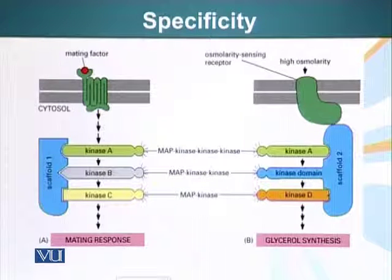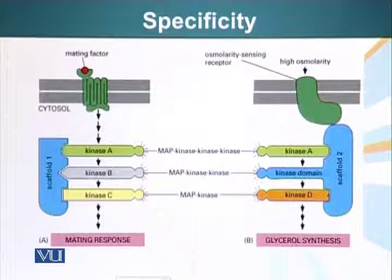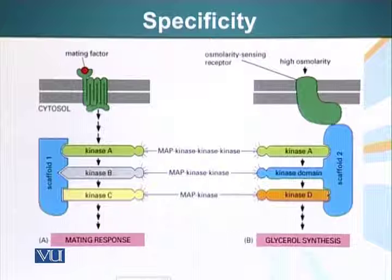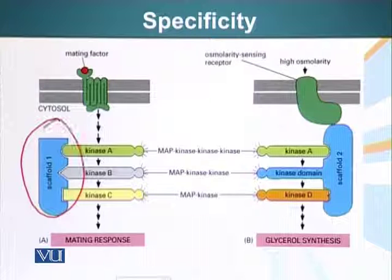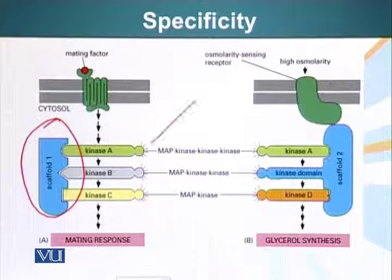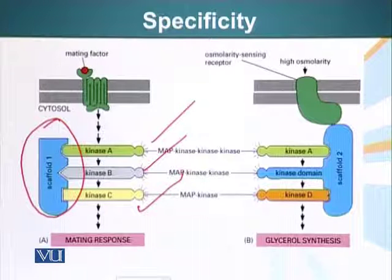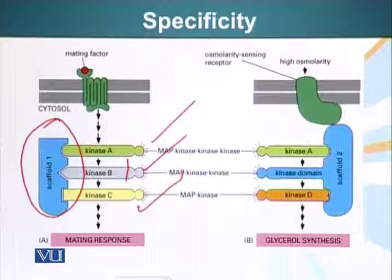I was telling you how does a cell know which MAP kinase kinase kinase to activate, or which particular molecule to activate when a signal is received. That depends upon the type of the cell, the machinery of the cell, and also several other factors — genetic factors, environmental factors. Such control is generally exerted by scaffold proteins. For example, here there is scaffold one and it can accommodate kinase A, kinase B, and kinase C. This scaffold protein is restricting how the signal is transmitted — it is transmitted from A to B to C.